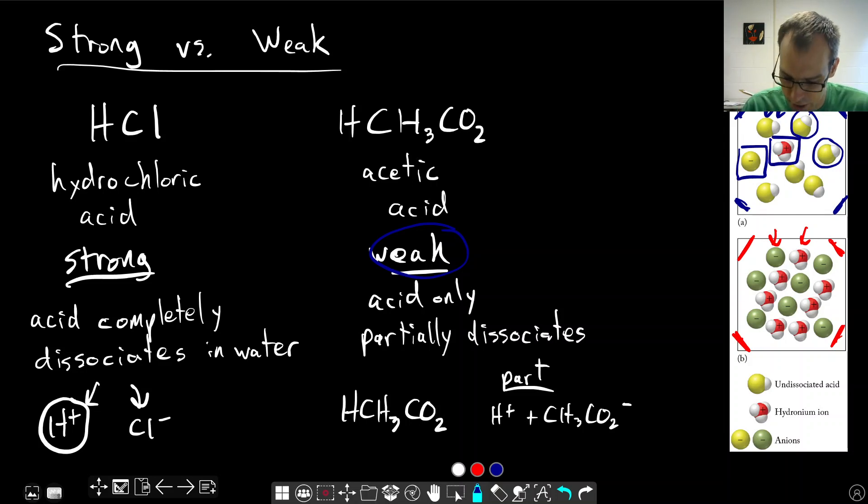And so this is the main difference between a strong acid, like HCl, and a weak acid, like acetic acid, is whether it completely dissociates or not.